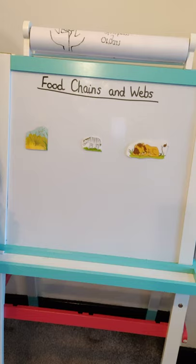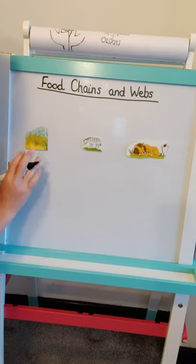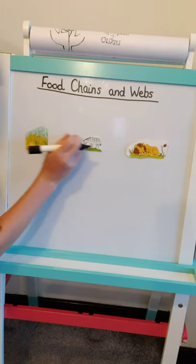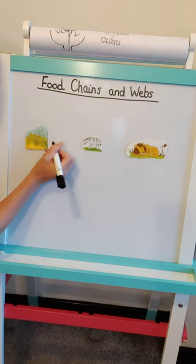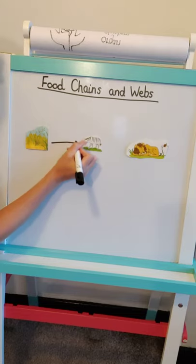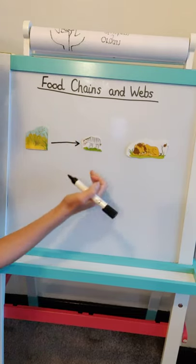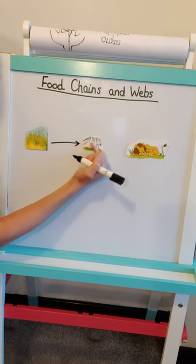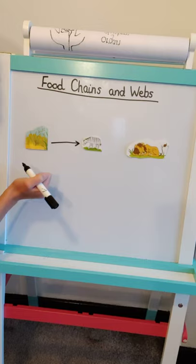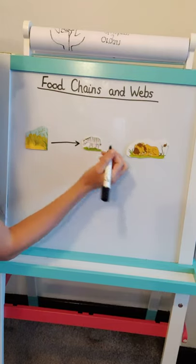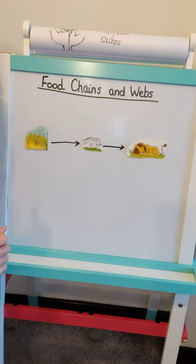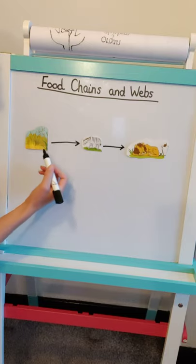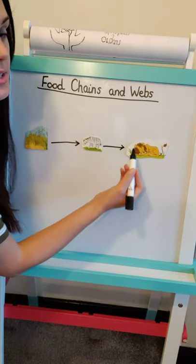So that's a nice easy standard food chain, and what we're missing here are the arrows. We've got the grasses and they get eaten by the zebra, so the zebra eats those grasses. We put the arrow in that direction towards the eater — so the zebra is the thing that's eating and that's the way the arrow goes. Then the zebra gets eaten by the lion and again the arrow goes that way. So you can think of the arrow as saying 'gets eaten by' — the grass gets eaten by the zebra, the zebra gets eaten by the lion.